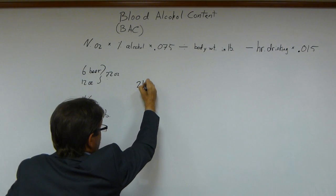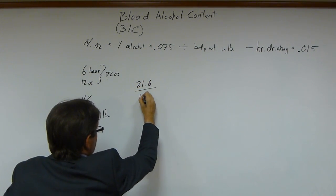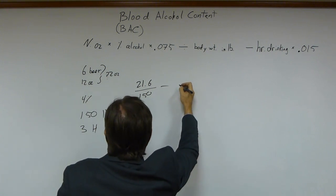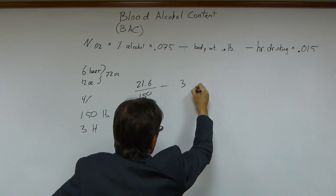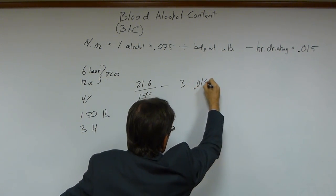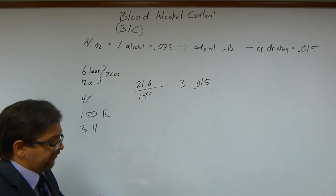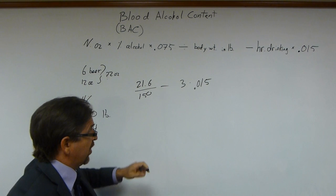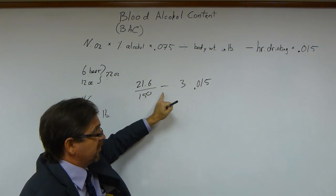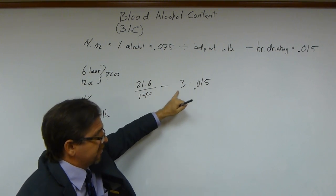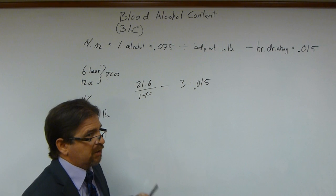So far we have 21.6 divided by body weight, which is 150. We still have hours of drinking times 0.015 to handle. I'm going to solve the division first, then solve that multiplication, and then subtract — because I don't want to subtract before I'm done multiplying, or I'd be messing up my order of operations and get the wrong answer.